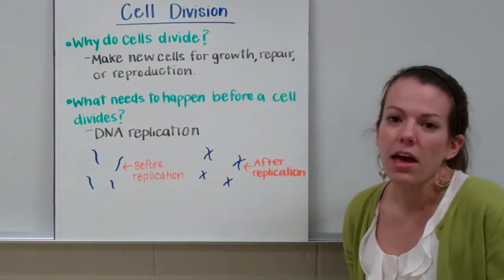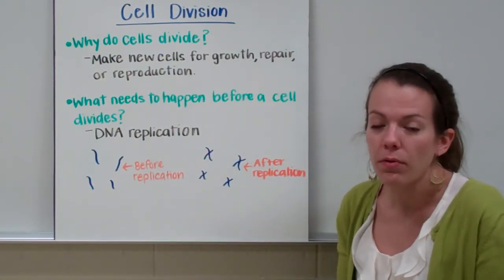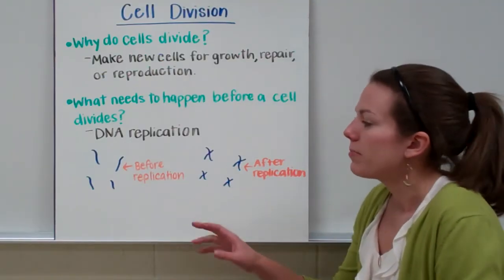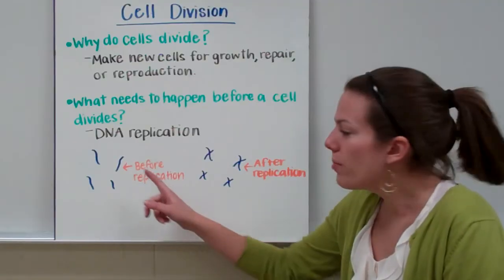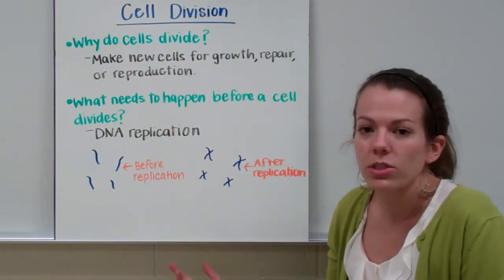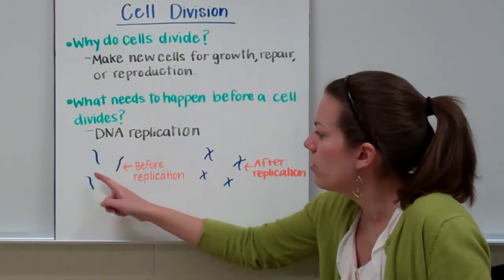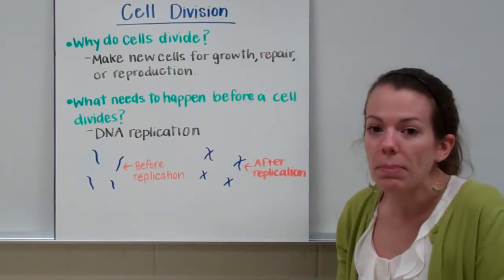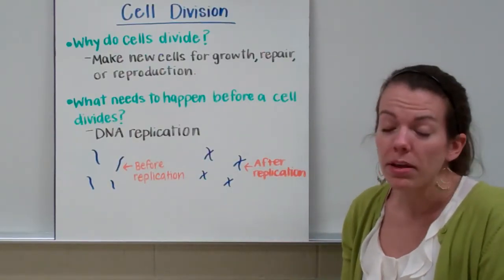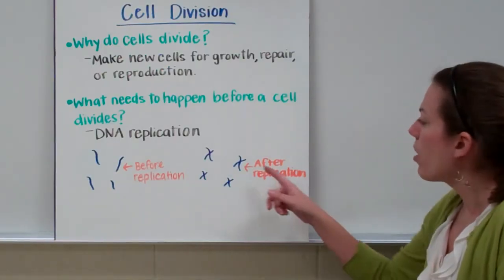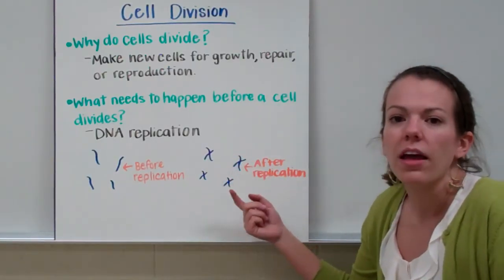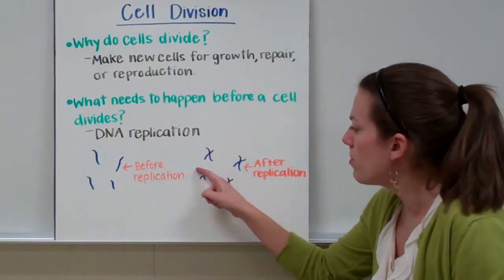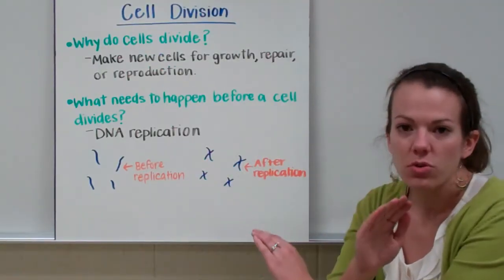Now let's take a look at what our chromosomes look like before and after replication. Before replication, our chromosomes are single chromosomes — single lines or single squiggles. After replication, you want to look for chromosomes that look kind of like an X. These still count as one chromosome each because they are attached to one another.